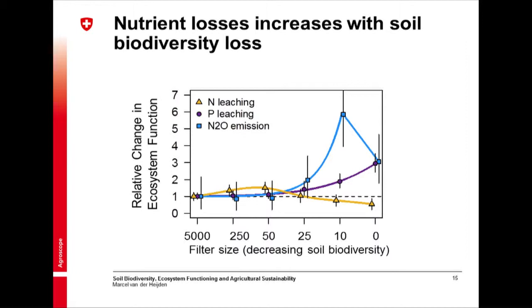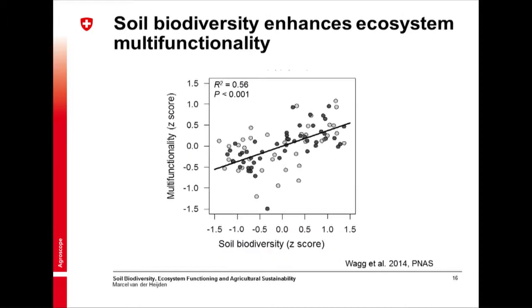Regarding nutrient leaching: nitrogen leaching was closely correlated with plant biomass, while phosphorus leaching and N2O emissions increased with a decline in soil biodiversity. We calculated a multifunctionality measure — an averaging approach where each ecosystem function is standardized and then averaged. With an increase in soil biodiversity, ecosystem multifunctionality increased very nicely. The whole experiment was repeated once, and we could confirm the results of the first experiment in the second.